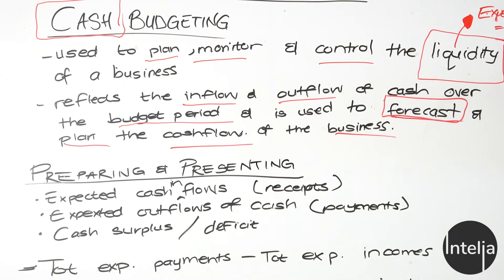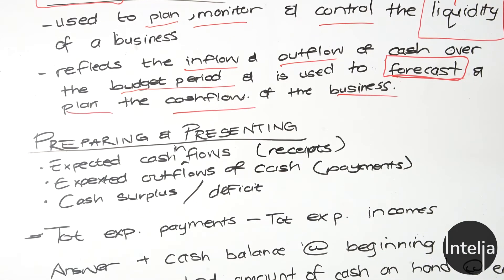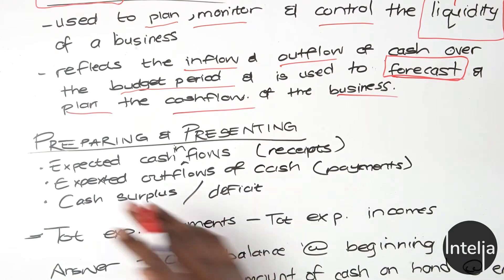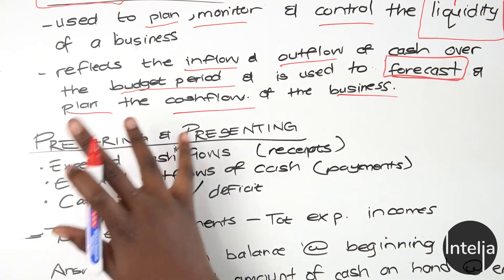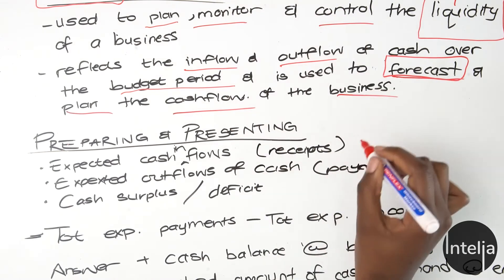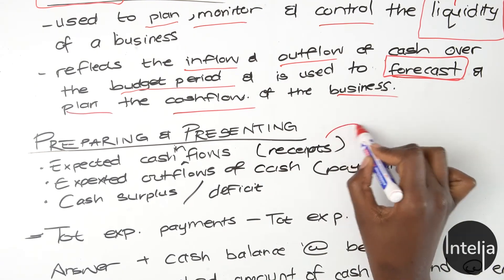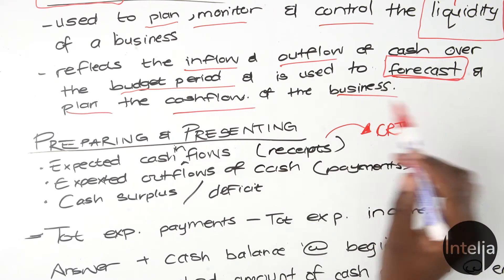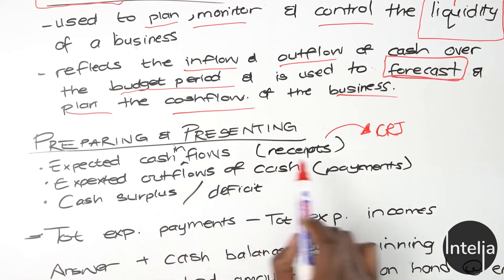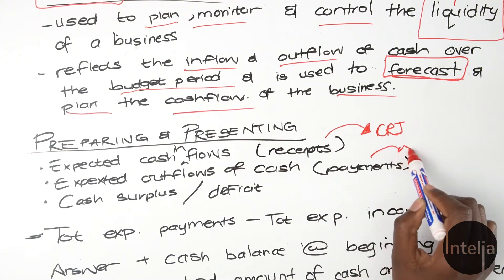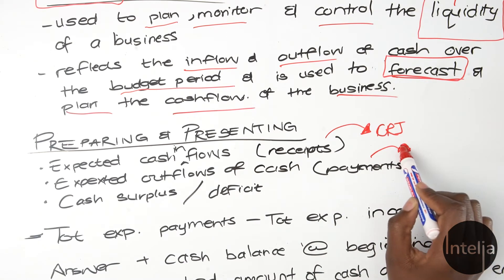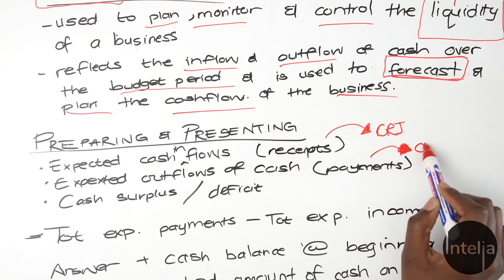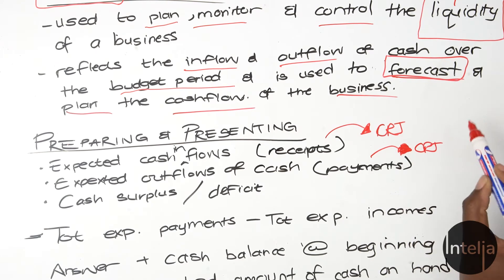When preparing and presenting cash budgets, we are supposed to consider expected cash inflows, which are represented on the receipts side — that's your CRJ. Then expected outflows of cash are found on the payment side — that's your CPJ.